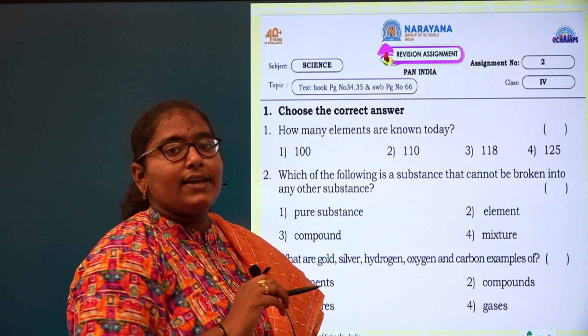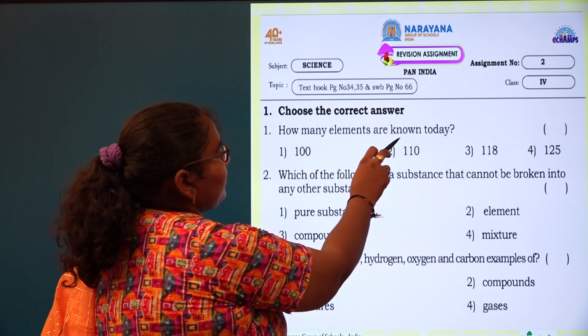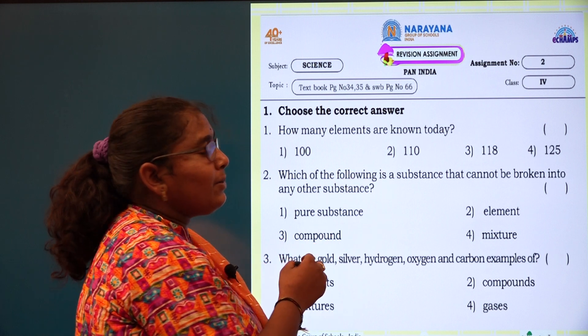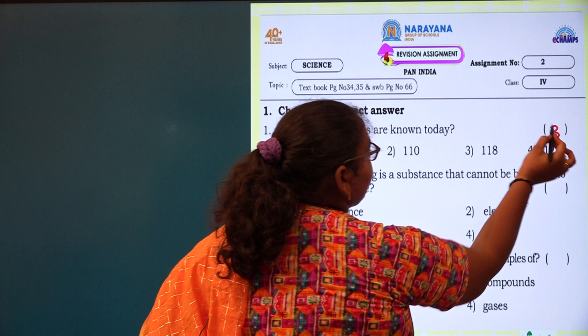First one, what have they given? Choose the correct answer. First question: how many elements are known today? How many known elements are there? 118. What is the option? Option 3.